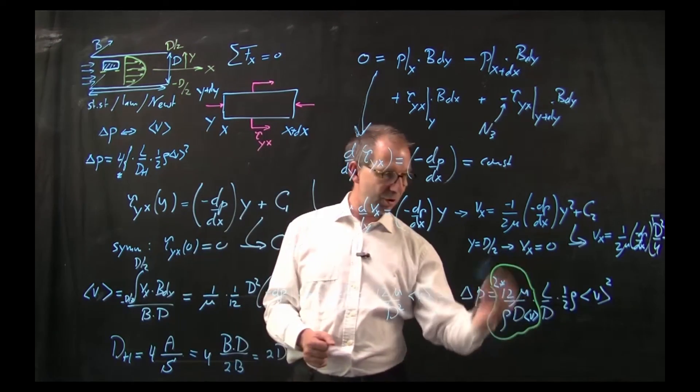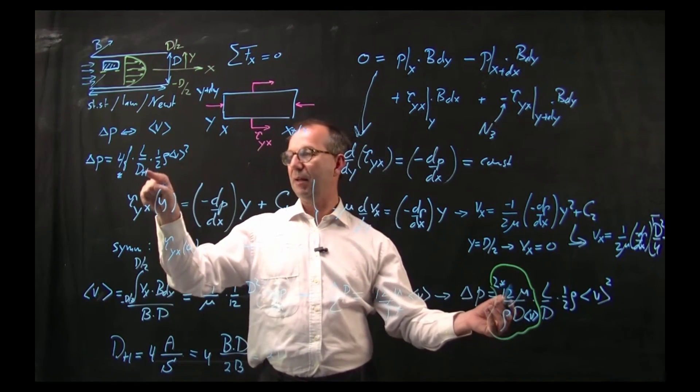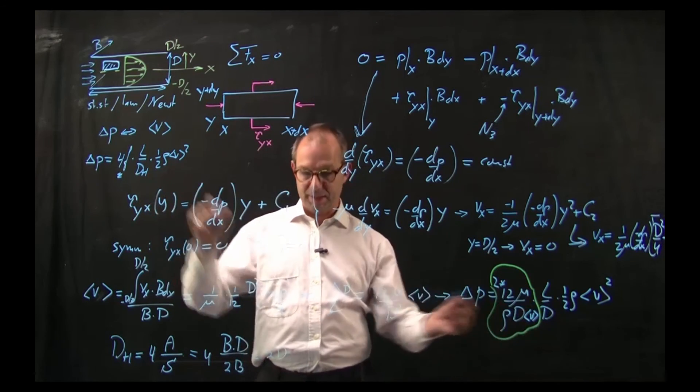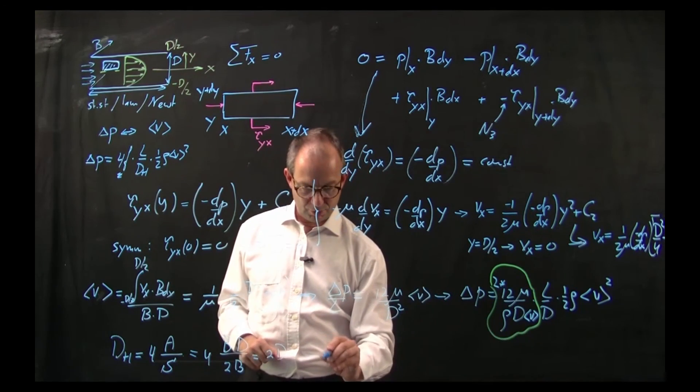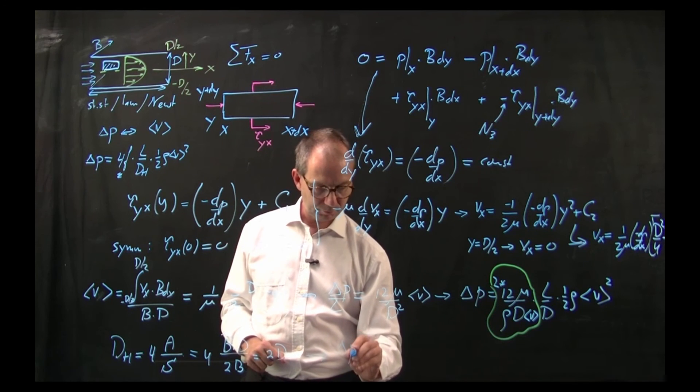So if you want to cast it in the right format as I defined it, I need to replace d by dh.